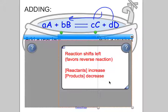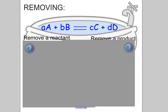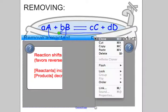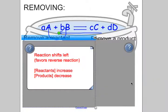What if I was to remove reactants? So instead of adding, I scoop water out of the bathtub — it leaves a big hole, and the water equalizes, shifting to the left to fill that hole. So if I remove reactants, it's the same thing as adding products. It's the opposite of adding reactants — it's going to shift to the left, favor the reverse reaction, increase my amount of reactants, and decrease my amount of products.